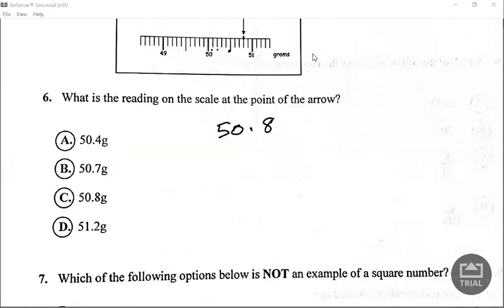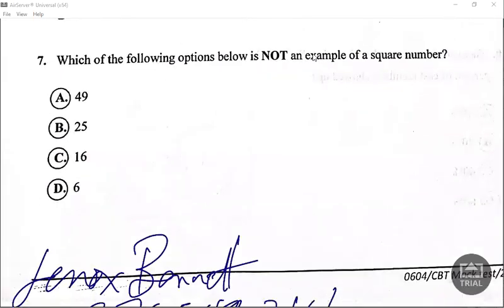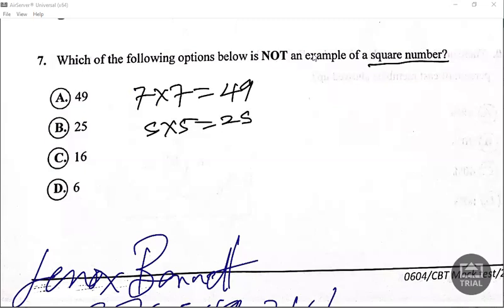Number seven says which of the following numbers below is not an example of the square number? A square number is when you multiply a number by itself. It's 7 times 7 which gives us 49, 5 times 5 which give us 25, 4 times 4 give us 16. There's no number we can multiply by itself to give us 6, so our answer would be 6.